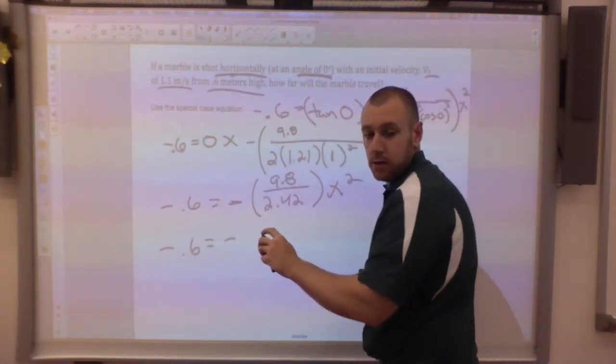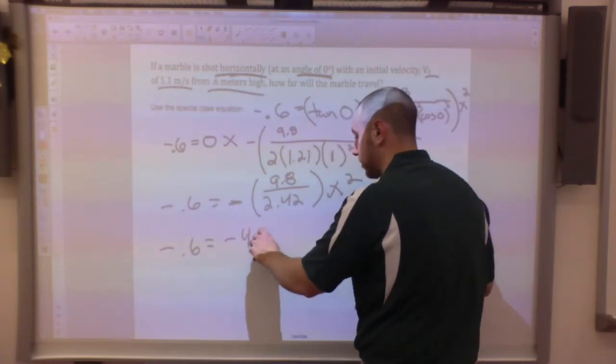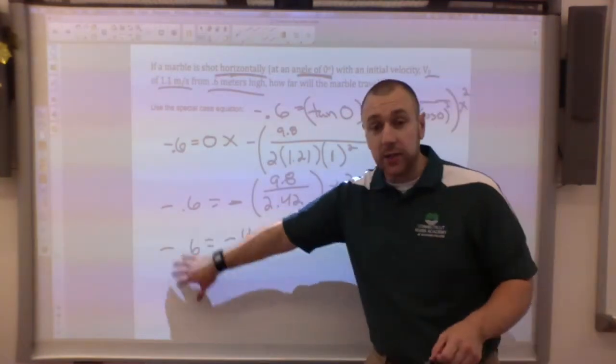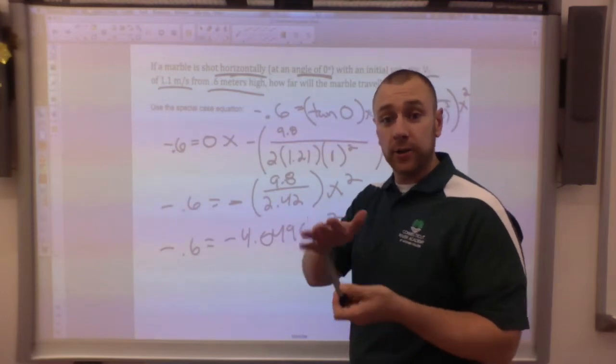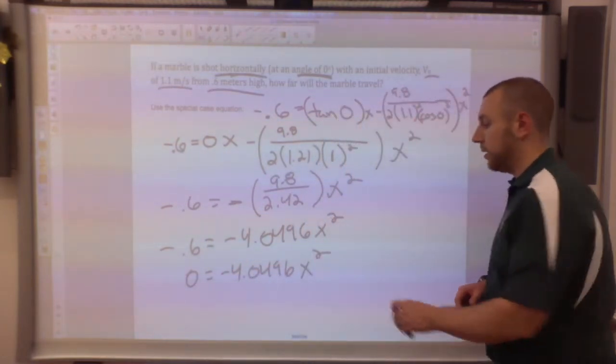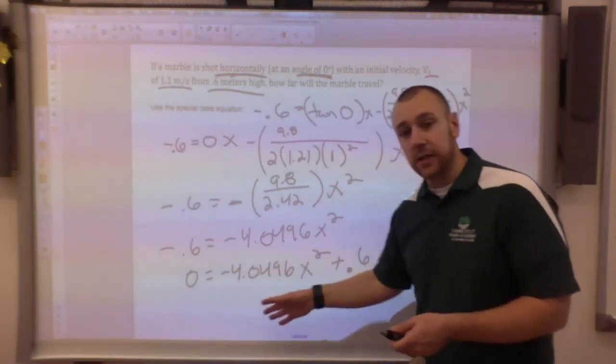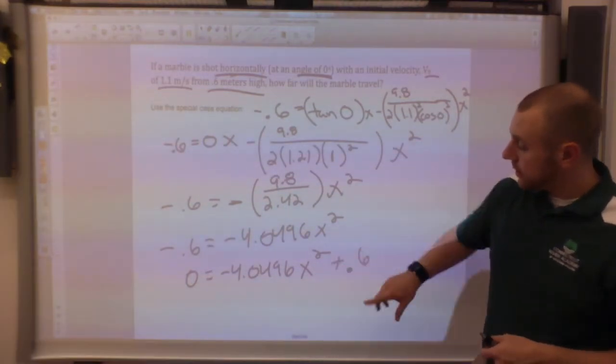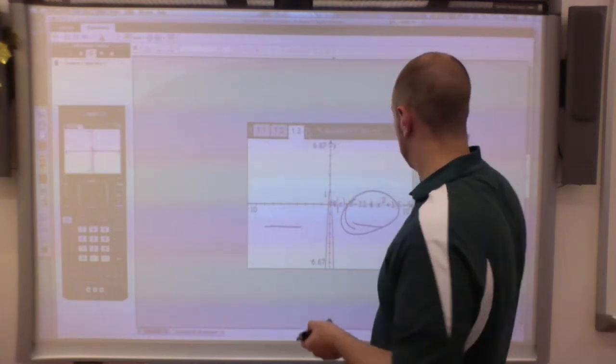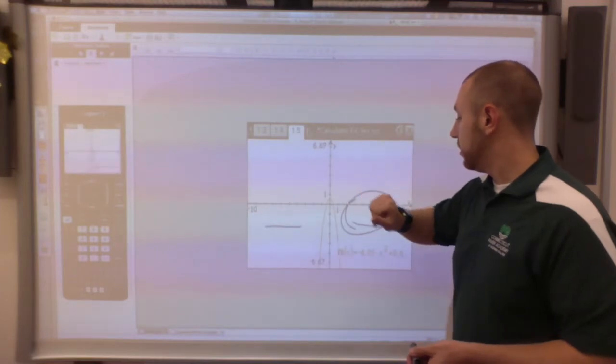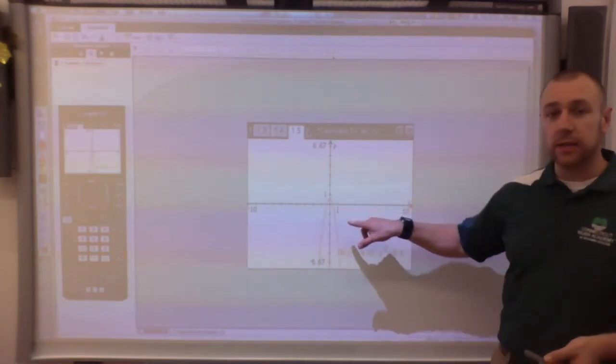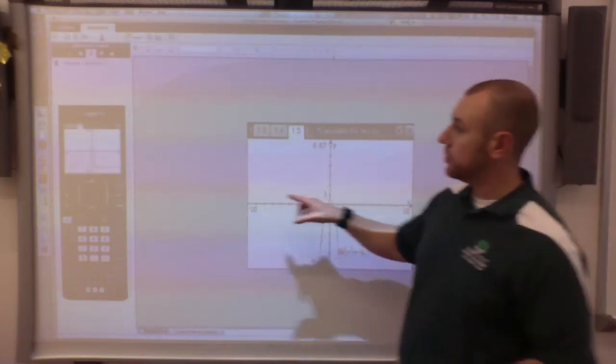Now I can divide these: negative 0.6 equals minus 4.0496 x squared. This is a quadratic still because it has that x squared. I'm going to move this over and treat that as my c. This is going to be zero equals negative 4.0496 x squared plus 0.6. Now I can graph this equation. This is my graph. Again it's very tight to that axis so it's very hard to see, so I'm going to again zoom in.